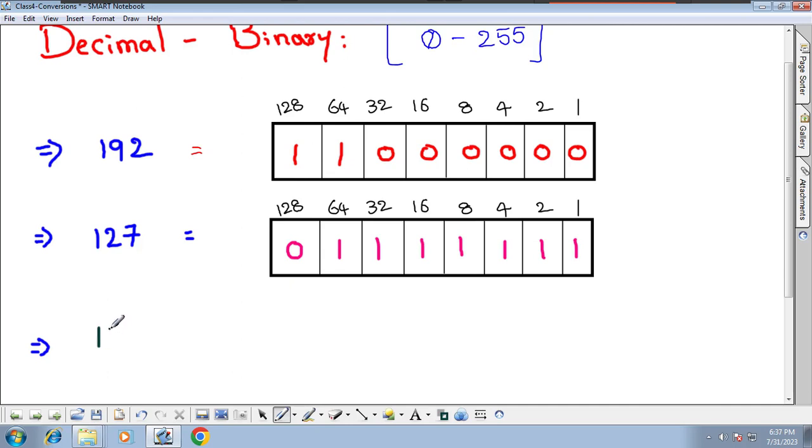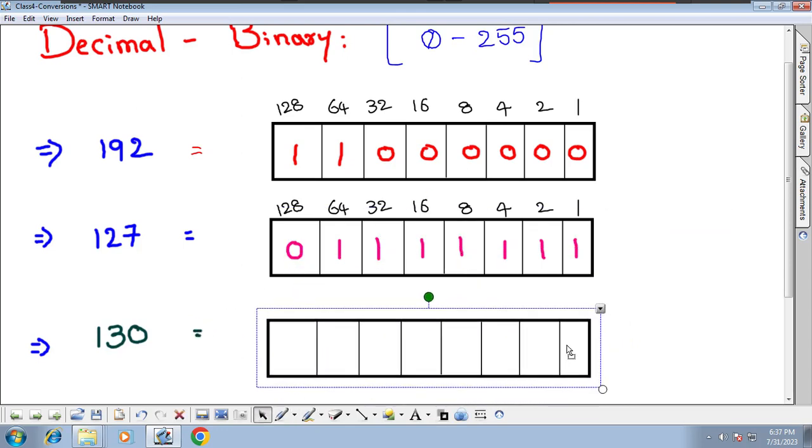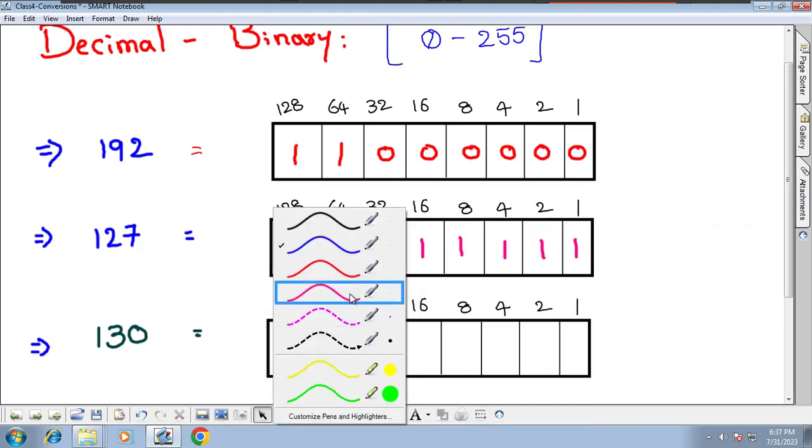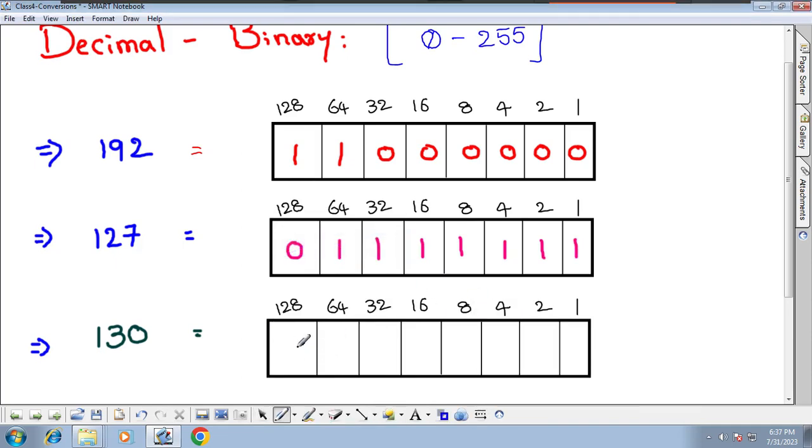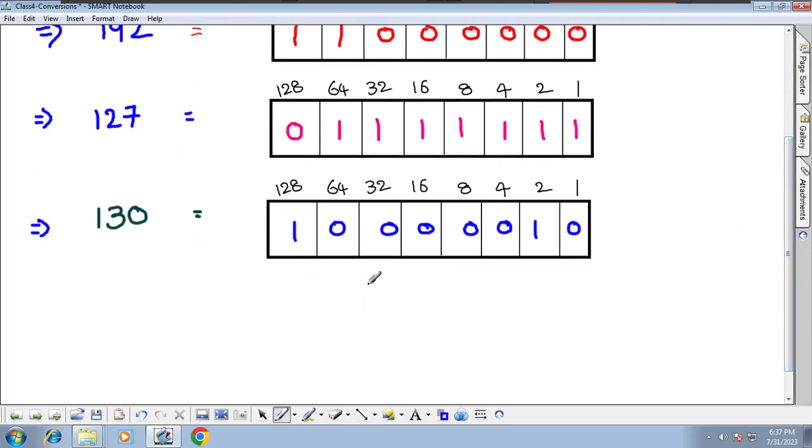Let's take some other number. Let's go for 130. I want to convert 130 into binary. I can make it one, right. I will go for 128 plus 2 equals 130. That's all, over.